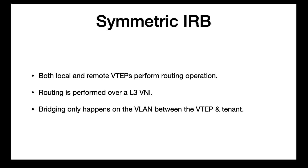For symmetric IRB, both the local and remote VTEPs perform the routing operation. Routing is performed over a Layer 3 VNI, and bridging only happens between the VTEP and the client at both the ingress and egress VTEPs. I'll have a series of videos on VXLAN with lab scenarios covering asymmetric and symmetric IRB in more detail. I hope this video was useful — if you liked it, subscribe to my channel and stay tuned for the next one.